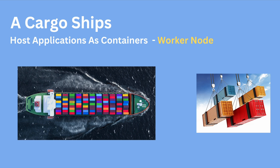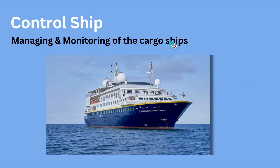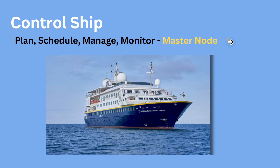We have worker nodes, and then we have a control ship which manages and monitors the cargo ships. We can think of this control ship as the master node, because it plans, schedules, monitors, and manages the cargo ships. So the master node is similar to the control ship.